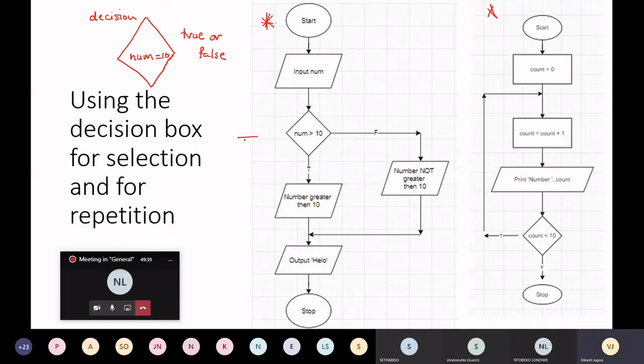There's the decision box, this is my condition: is num greater than 10? If it's true I follow this pathway, if it is false I follow that pathway. This is what we did yesterday.